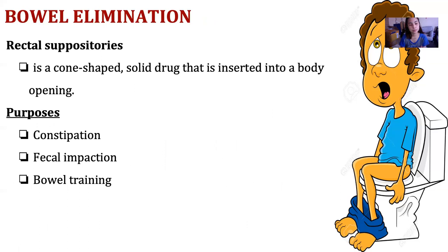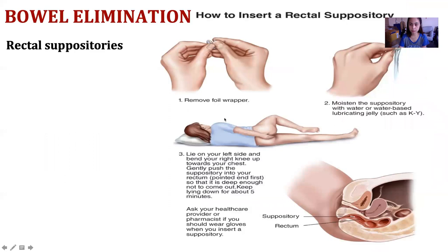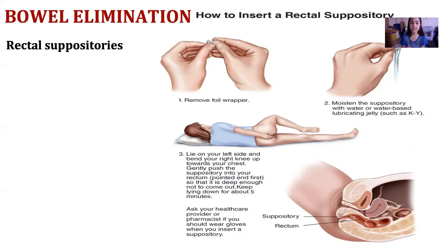For patients with constipation or fecal impaction undergoing bowel training, we also use rectal suppositories — a cone-shaped solid drug inserted into the body opening. Before inserting, moisten it with lubricating jelly to reduce discomfort. Position the patient on their left side with the right knee bent — a modified Sims or lateral position — and hold it in place for 5 minutes. When giving an enema, the patient should also be in the left lateral position because the anatomy of the intestines allows the enema solution to flow more effectively in that position.